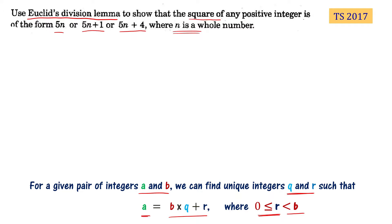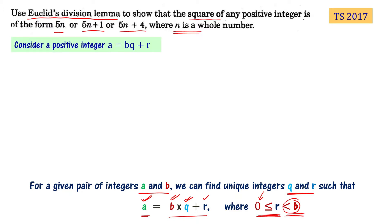This is Euclid's division lemma. Any integer a can be written as b times q plus r. Here r is the remainder, q is the quotient, b is the divisor, and a is the dividend. The remainder r can be zero or any positive integer less than b. Now let me consider a positive integer a equal to bq plus r. As per Euclid's division lemma, r can be zero or any number less than b.